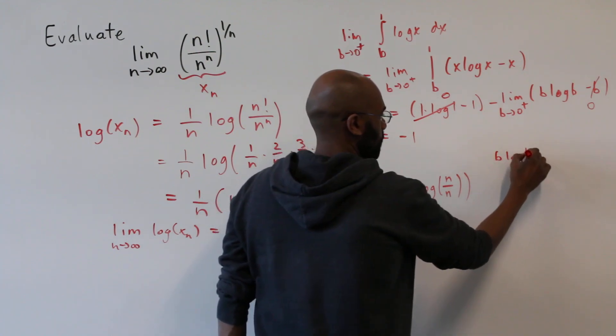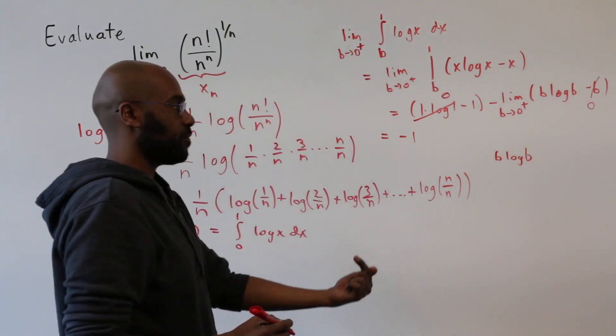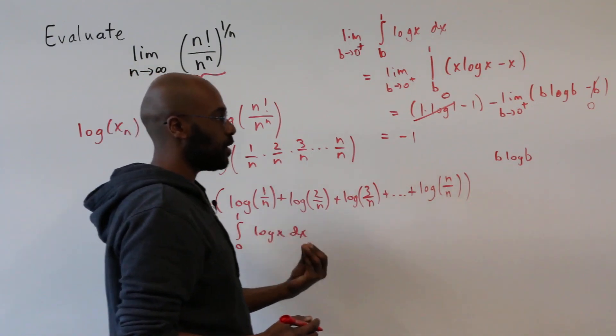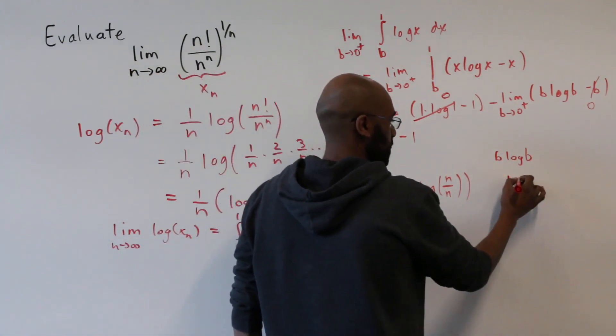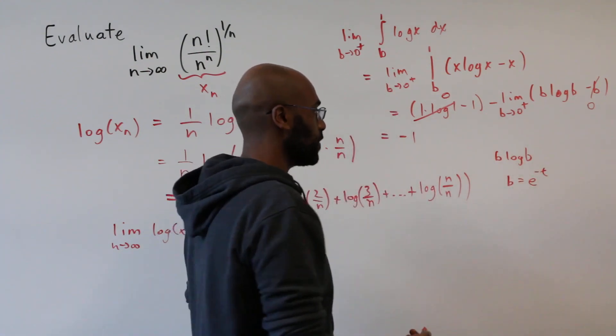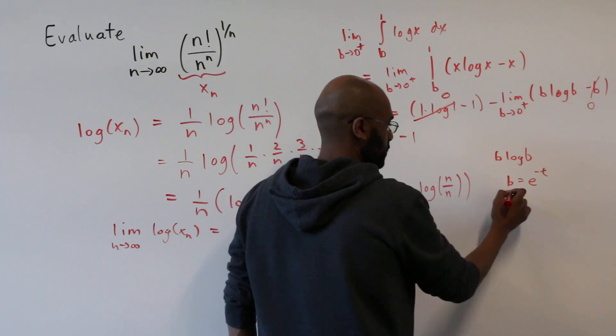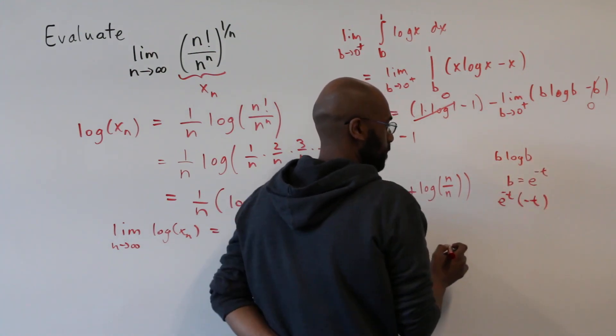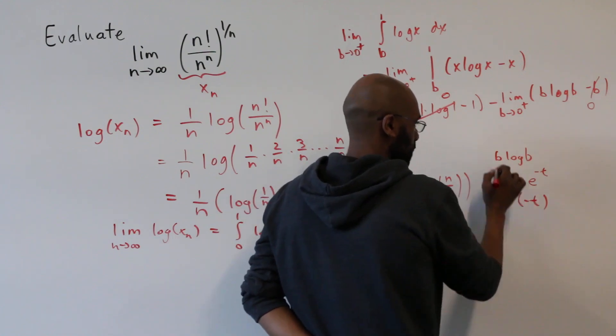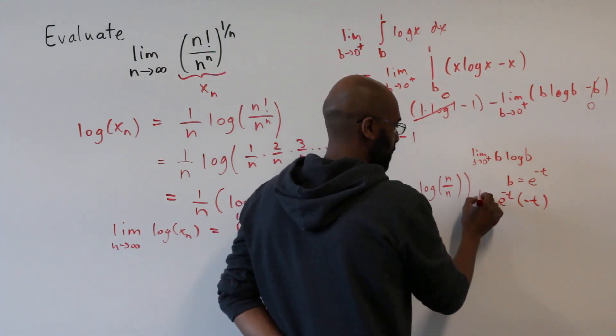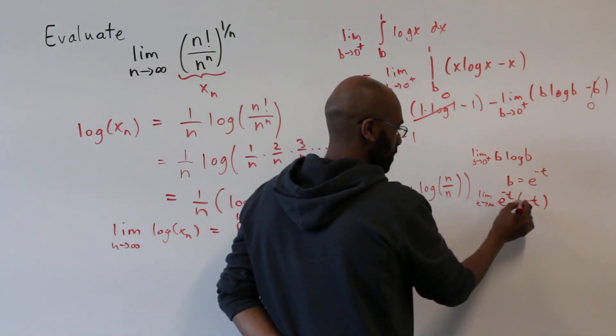So b log b, as b is going to 0 from the right, so b is positive but getting smaller and smaller, we can think of b as being something like e to the negative t, where t is going to infinity. So this quantity here is going to look like e to the negative t times the logarithm of that, which is negative t. And so this expression, finding out what the limit as b approaches 0 from the right of this thing is the same as finding out the limit as t goes to infinity of this thing.